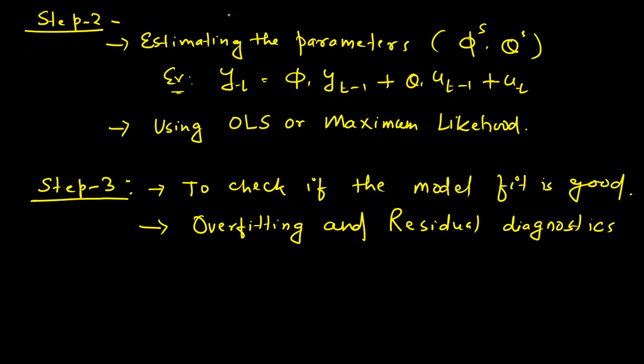In the second step, you do the estimation. Now that it is very clear how many lags are to be used for yt and for the residual term ut, you find out the parameters. For example, yt = φ1*yt-1 + θ1*ut-1 + ut. This is the ARMA(1,1) model.